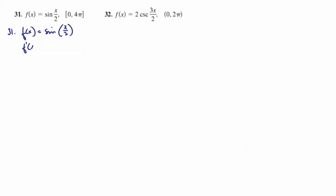The first derivative would be cosine. It's a function composition. Take the derivative of the outside, leave the inside alone, times the derivative of the inside, and we're done. So that would be 1 half cosine of x over 2.